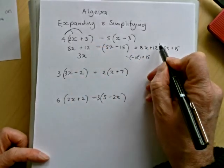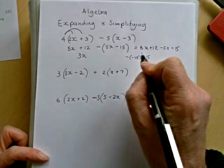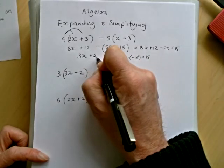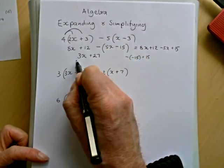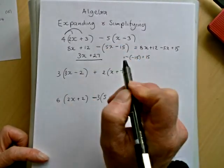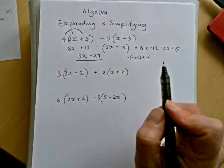And then we've got 12 plus 15 is 27. So expanded and simplified, our answer is 3x plus 27.